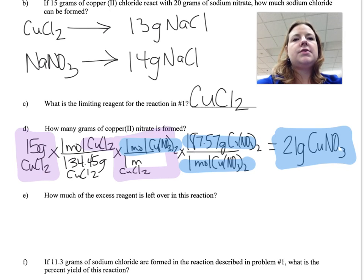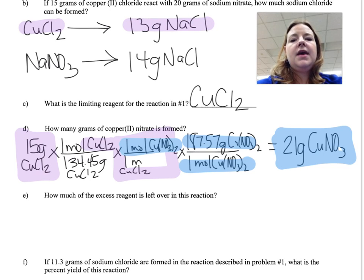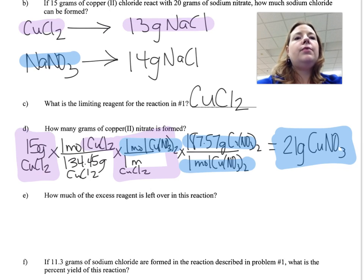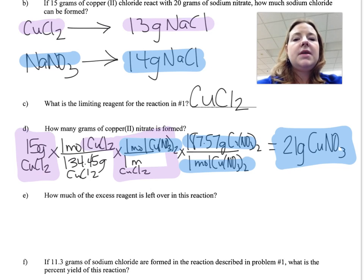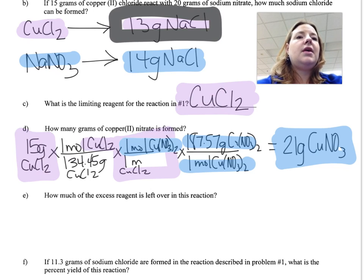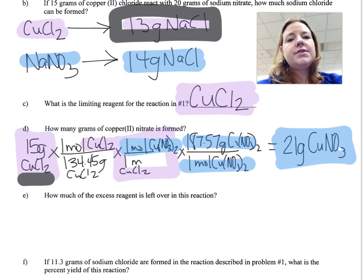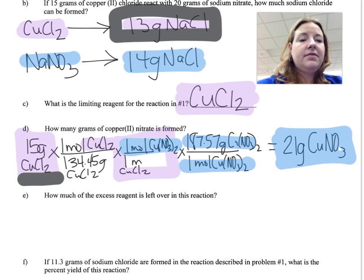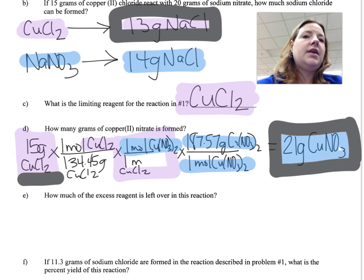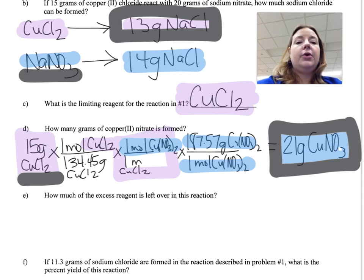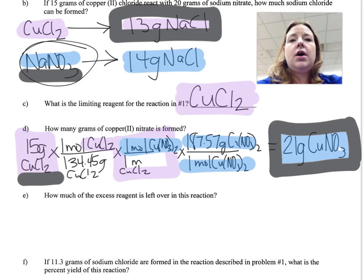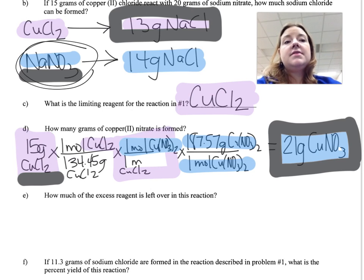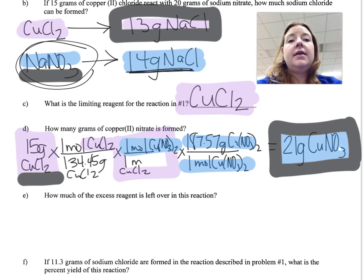So we've learned that given 15 grams of copper chloride, we can make 13 grams of sodium chloride; given 20 grams of sodium nitrate, we could make 14 grams. But we don't have enough copper chloride to make 14 grams, so copper chloride is the limiting reactant — the most sodium chloride we can make is 13 grams. That's why in problem D we start with the copper chloride, because we cannot make any more even though we have plenty of sodium nitrate. We'll have extra sodium nitrate left over.